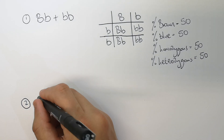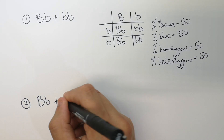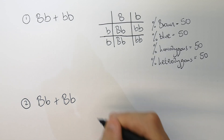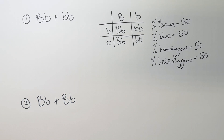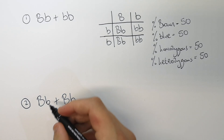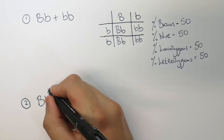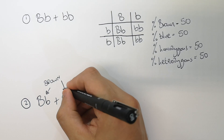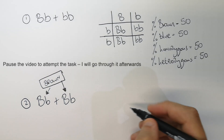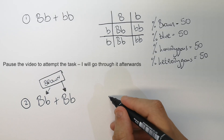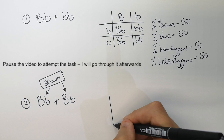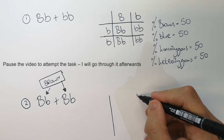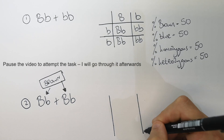This next example is going to show a mum which has got big B, little b, and a father which has got big B, little b. Because they've both got the dominant big B allele, that means they're going to have brown eyes. If you want to attempt the Punnett square for big B, little b, then pause the video now to do it yourself.